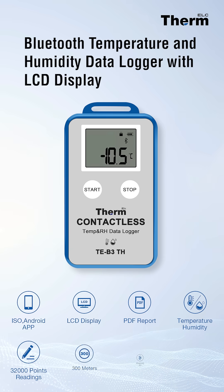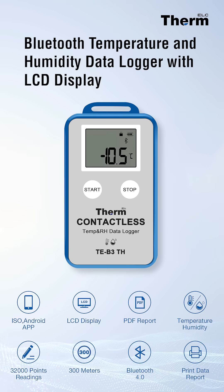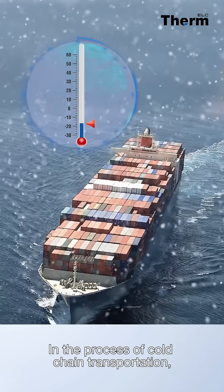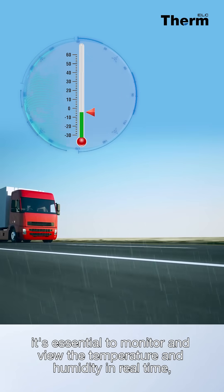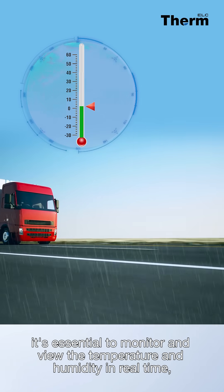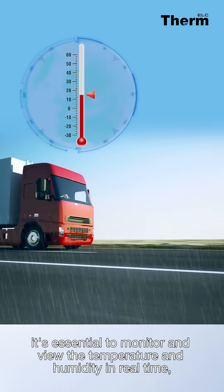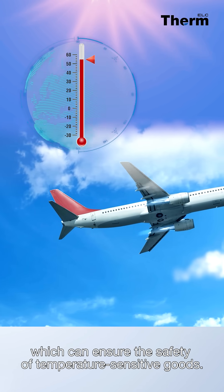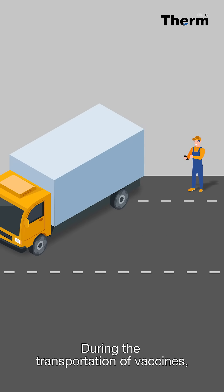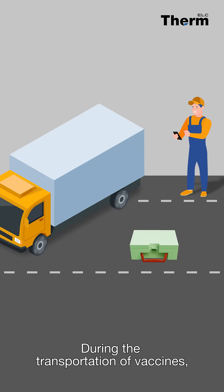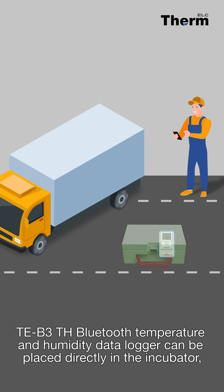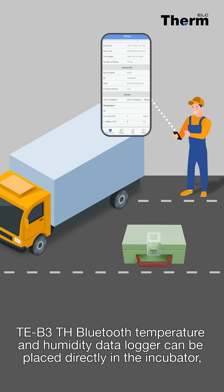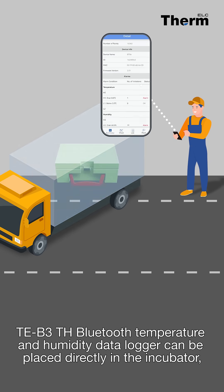Bluetooth temperature and humidity data logger with LCD display. In the process of cold chain transportation, it's essential to monitor and view the temperature and humidity in real time, which can ensure the safety of temperature-sensitive goods. During the transportation of vaccines, the T03 Bluetooth temperature and humidity data logger can be placed directly in the incubator.